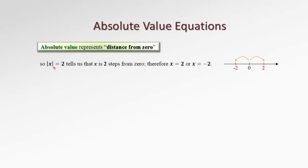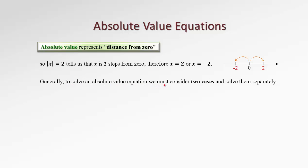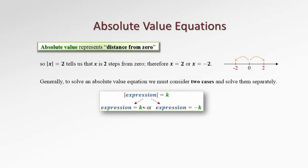Let's see how we can do it algebraically without referring to the graph. Generally, to solve an absolute value equation, we consider two cases and we solve them separately. If we have any unknown expression under the absolute value sign, and this absolute value of something is equal to a constant number k, then to resolve this equation, we drop the absolute value and rewrite this in two cases.